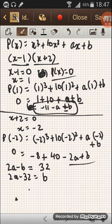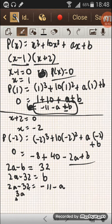If we substitute b's value here, then we get 2a minus 32 will be equal to minus 11 minus a. Now let's solve. This 2a plus a, 3a is equal to minus 11 plus 32, which is 21, and a will be equal to 7.